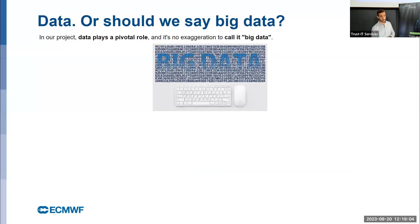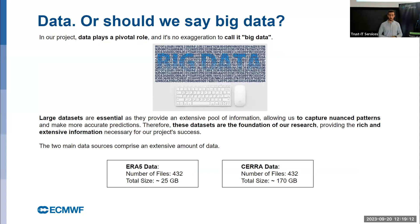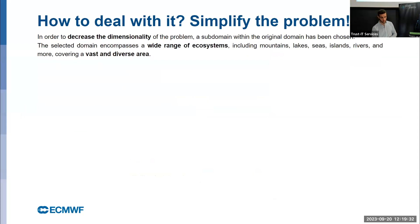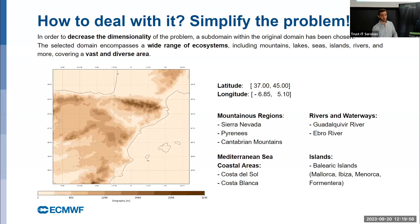Now we move to the data. Data is very important here; we have a lot of it — nearly 200 gigabytes — accessible publicly through the Climate Data Store. Just a few steps are needed to make ERA and CERA uniform. We decided to decrease the problem domain from all of Europe to a smaller region to iterate faster on model design choices. We chose a region that has diverse ecosystems: mountain regions, the Mediterranean Sea, rivers, and even islands.